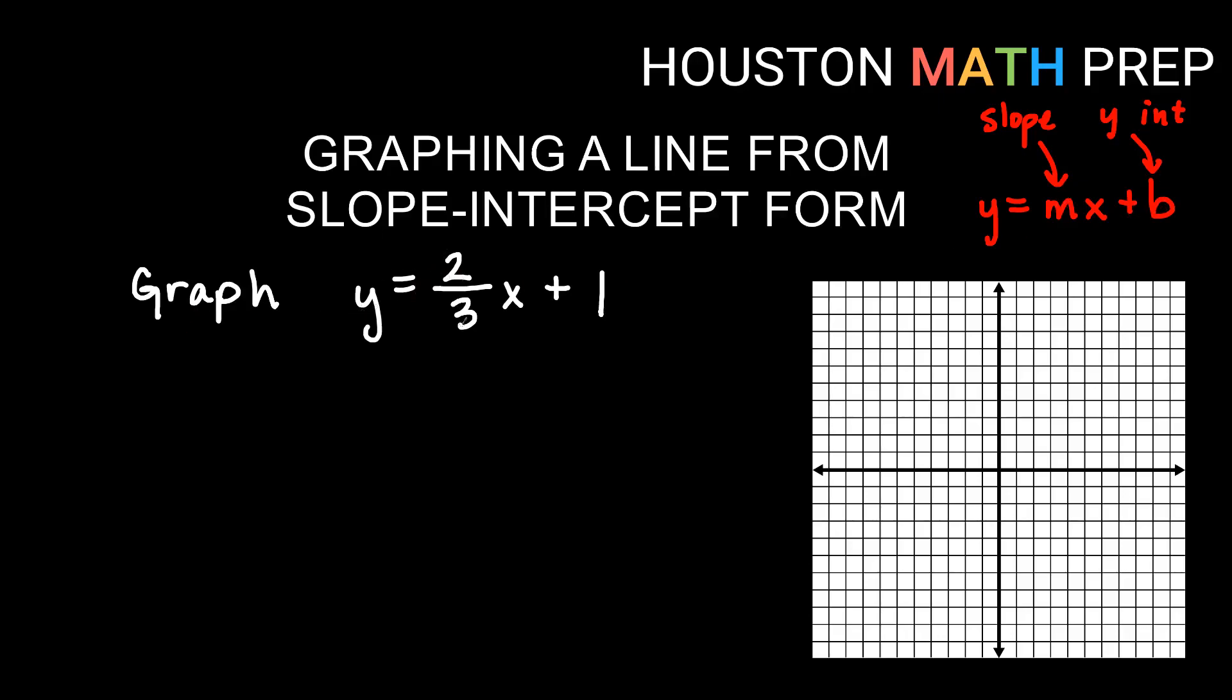So when I read y equals two-thirds x plus one, and I'm going to graph that, my slope is two-thirds, and this tells me that my b or my y-intercept equals one. So what we'll do first when we graph these is we will start at our y-intercept. So we're going to start at b. We'll go positive one on the y-axis, up one. So there's our y-intercept.